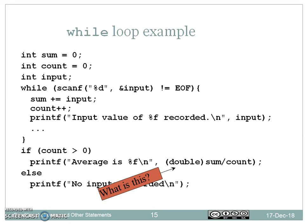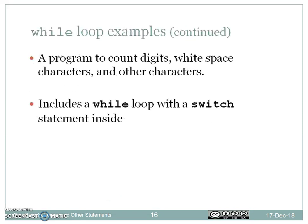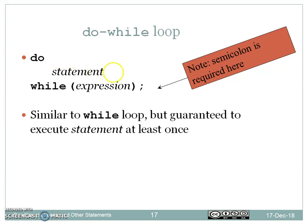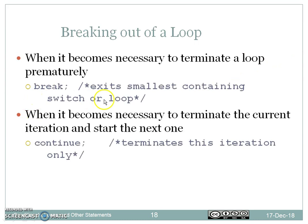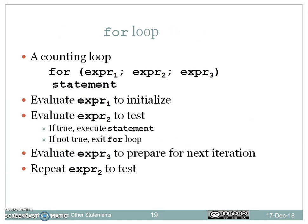An integer divided by an integer always gives an integer value; the integer value can be typecasted to double value and we print the double value. The do-while loop is called an exit-controlled loop, while the while statement is called an entry-controlled loop. At the time of entry of the loop, the condition is evaluated. In do-while, the expression is evaluated at the end, so the statements will be executed at least once. After the first execution, it checks the expression value; if false, it exits the loop. By using a break statement, we can come out of the loop; by using the continue statement, we can repeat the loop for the next iteration by skipping the remaining instructions.